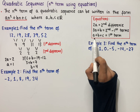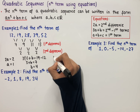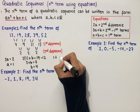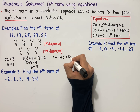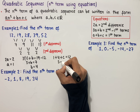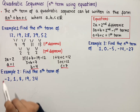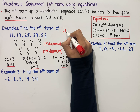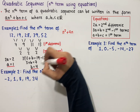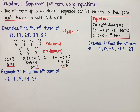Using the last equation we have a plus b plus c equals the first term. So 1 plus 4 plus c equals 12, which simplifies to 5 plus c equals 12, and so c equals 7. Now that we have the values of a, b and c, we can write the nth term as n squared plus 4n plus 7. And that is the nth term of this sequence.